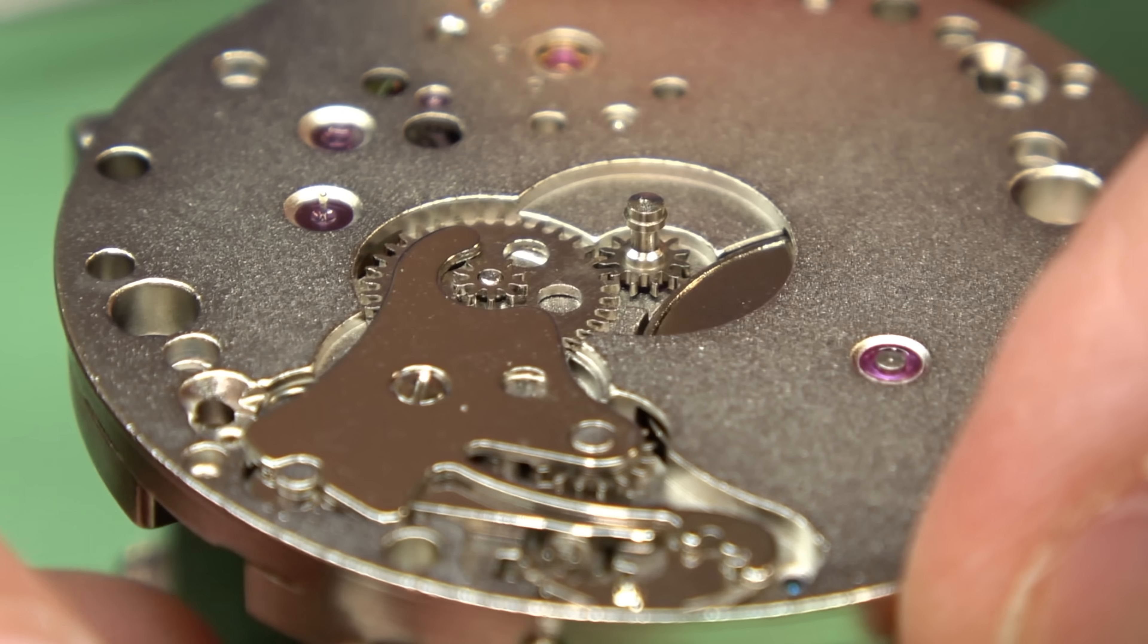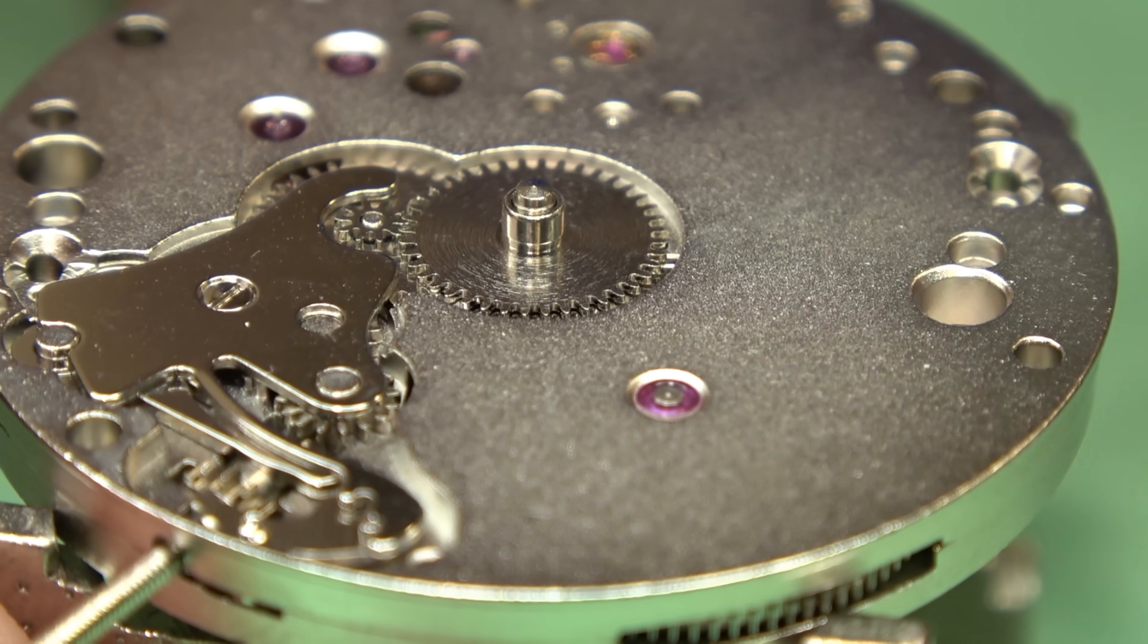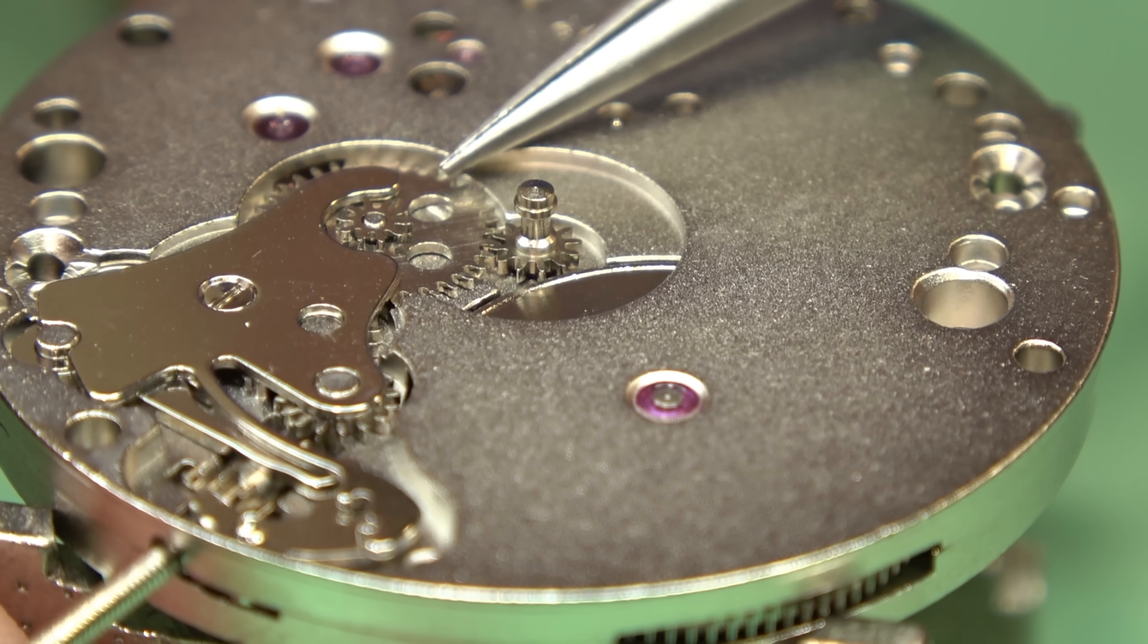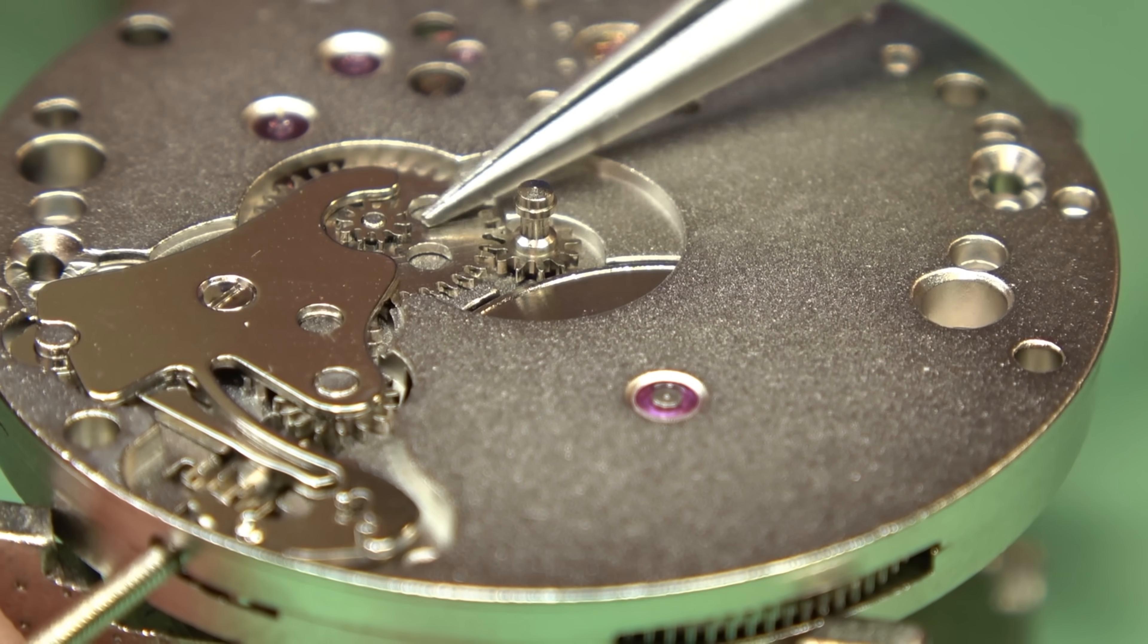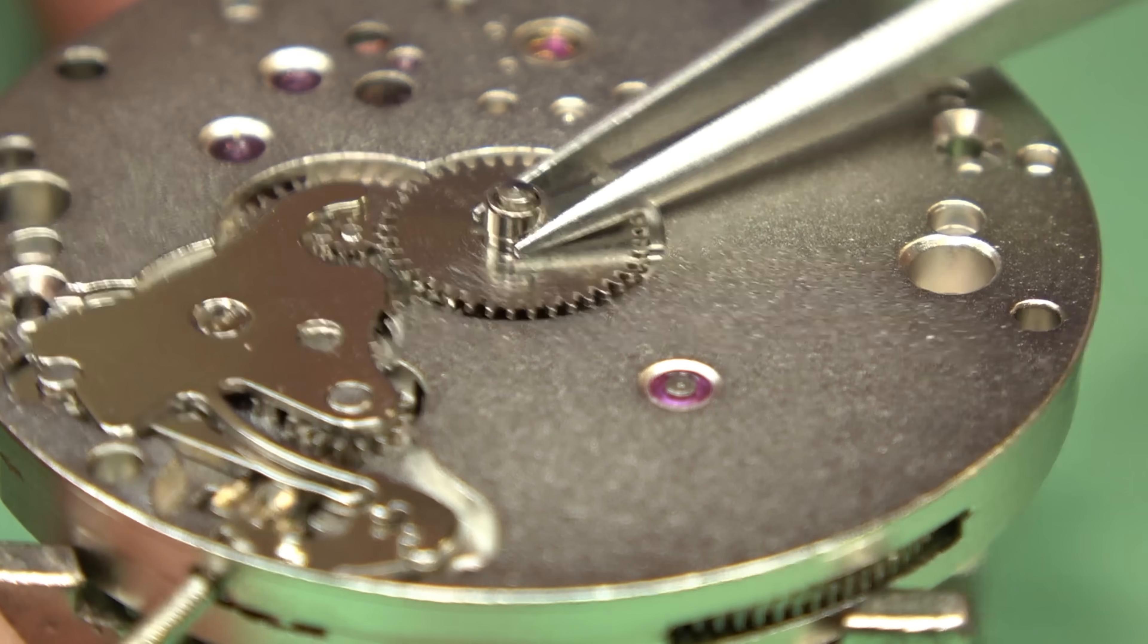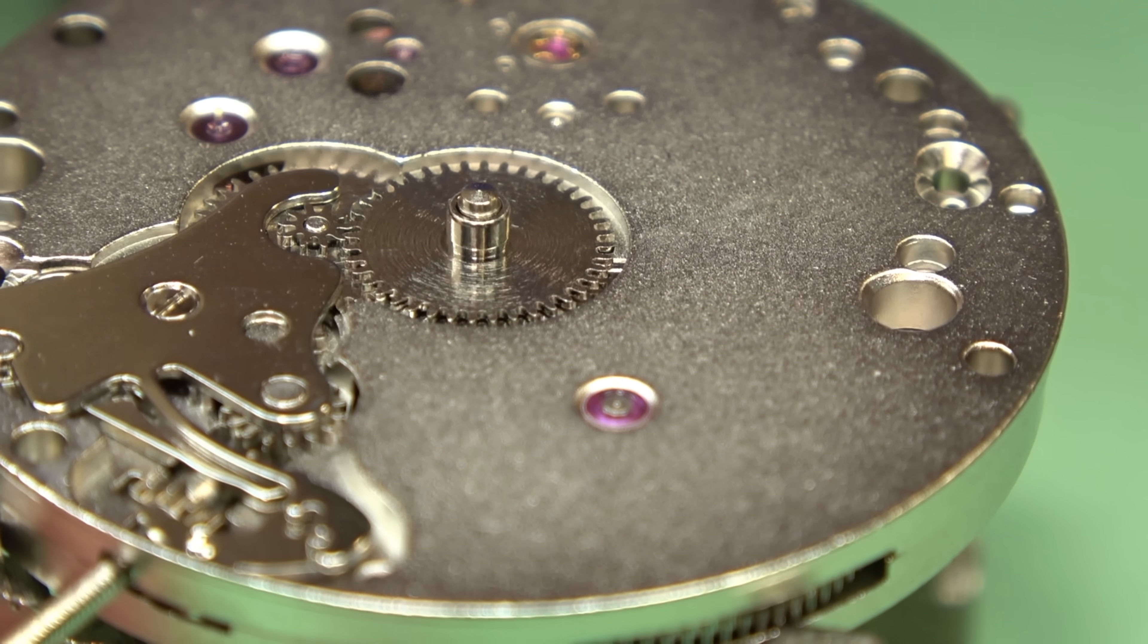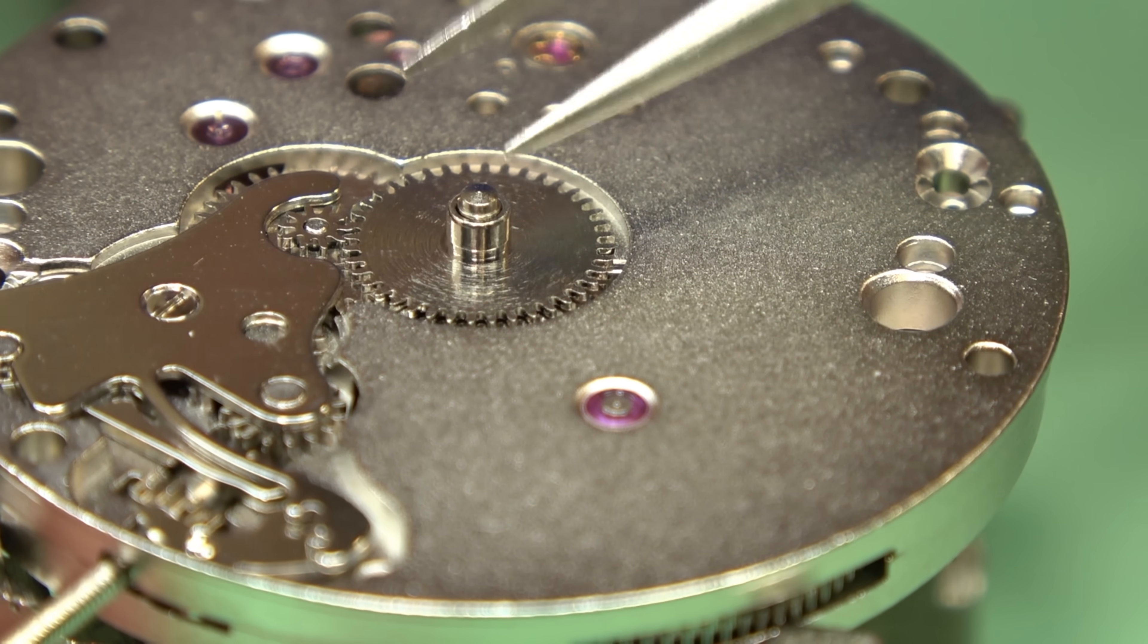So when we're in normal time telling mode, the canon pinion is turning, right? What's it bumping into? It's turning this gear, this gear and this gear are the same. So it's turning that gear, that gear then hits this gear here. And this is what the hour hand is mounted to. My point here is that everything is always moving forwards. Time is always advancing forward. We're never moving these gears backwards.